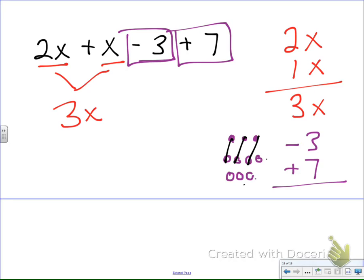And I have 1, 2, 3, 4 positives left. So what that tells me is that these 2 integers right here are going to come out to be a positive 4, which is going to look like 3x plus 4. And that's what we get.